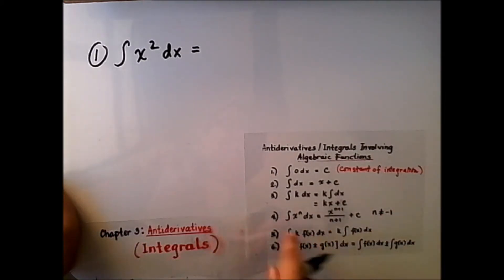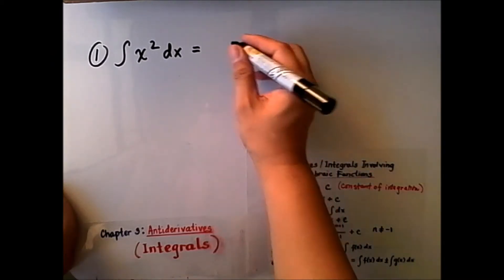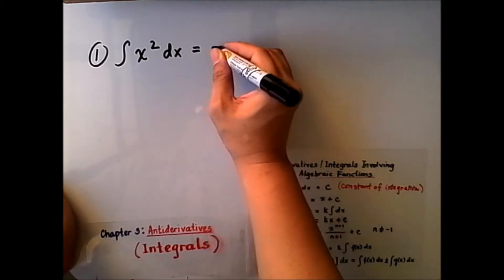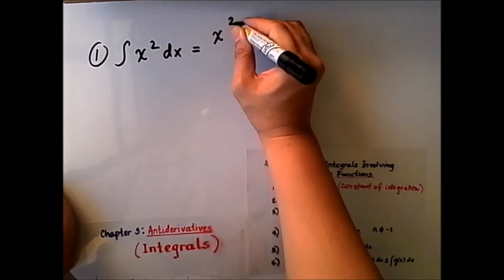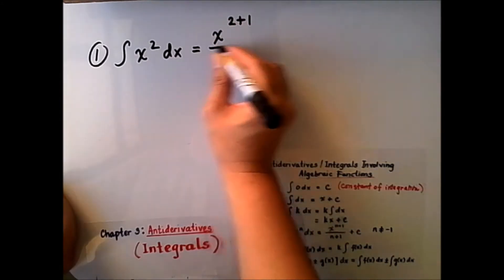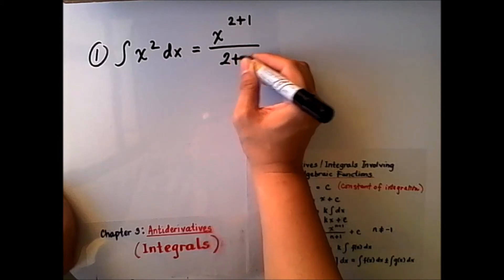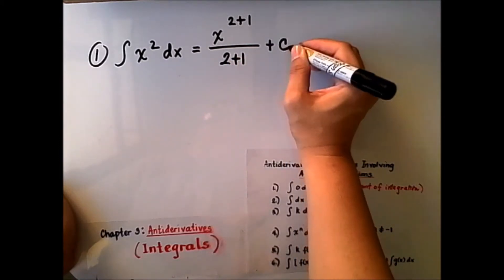Let's apply the fourth rule, which involves exponents. In this case, this can be written as x raised to the power of 2 plus 1, over 2 plus 1, plus c.